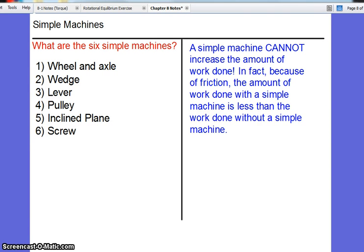Every complex machine can be broken into a combination of six simpler machines. Those machines being the wheel and axle, wedge, lever, pulley, incline plane, and screw.